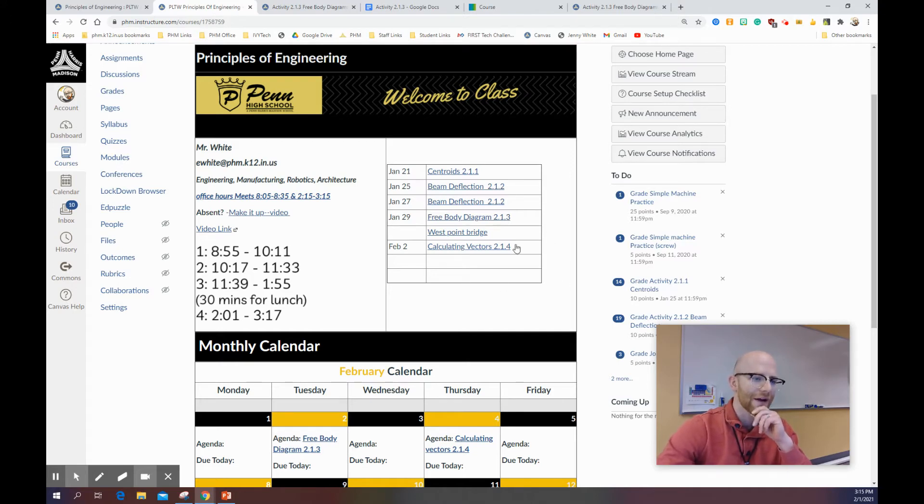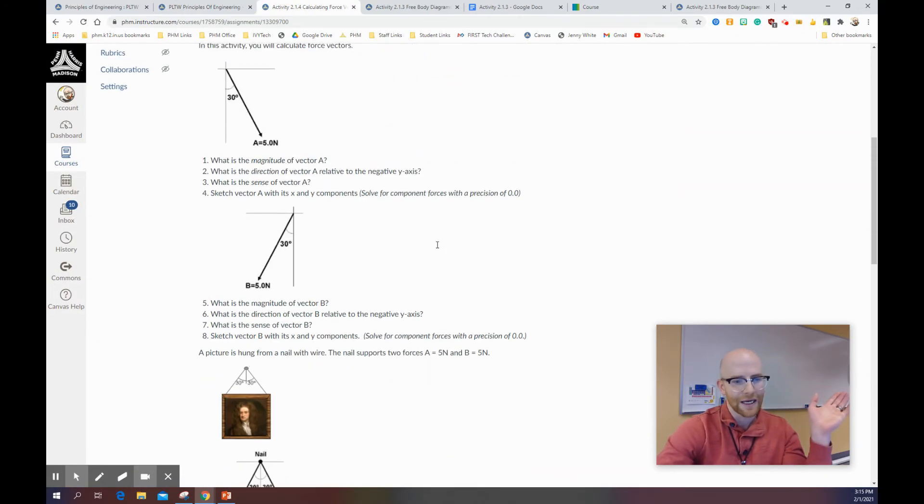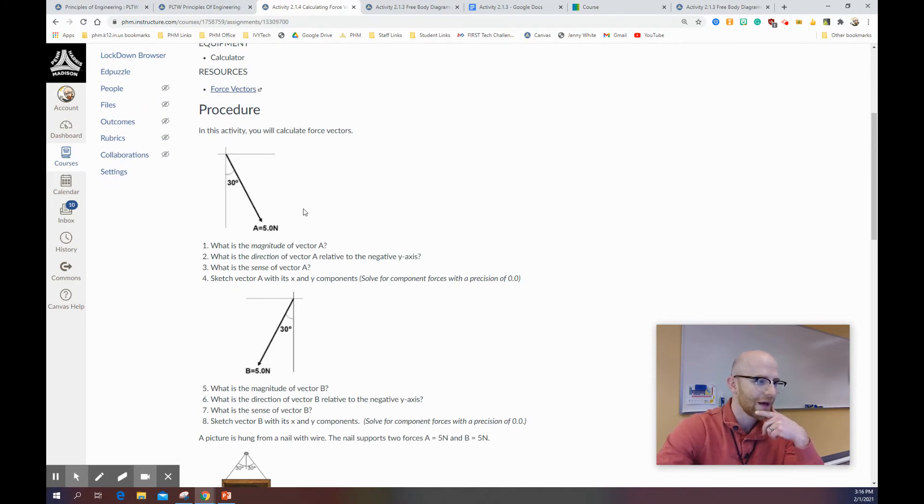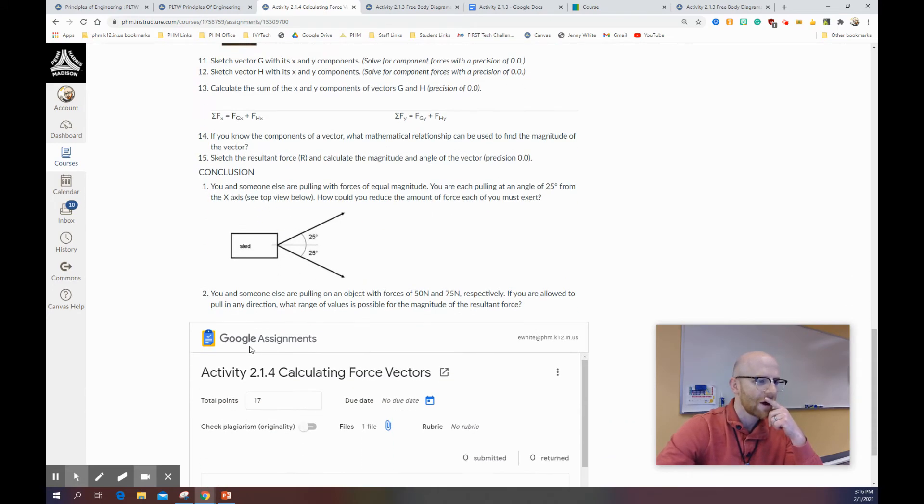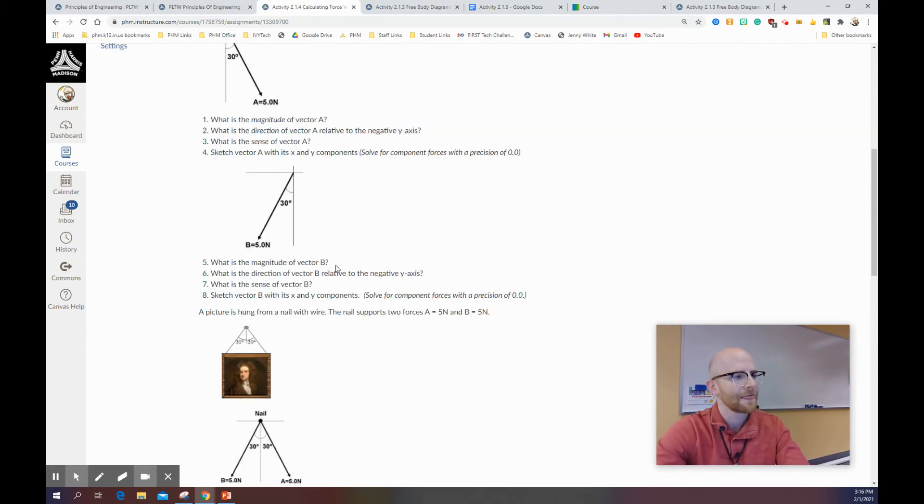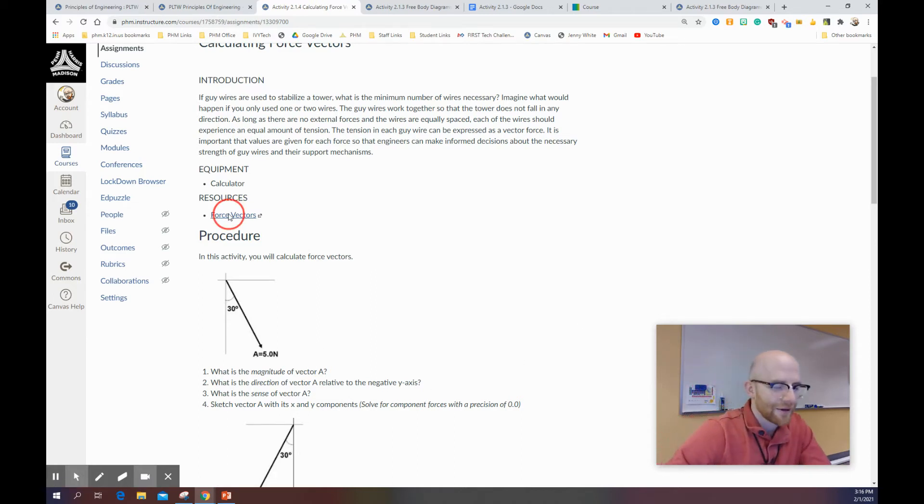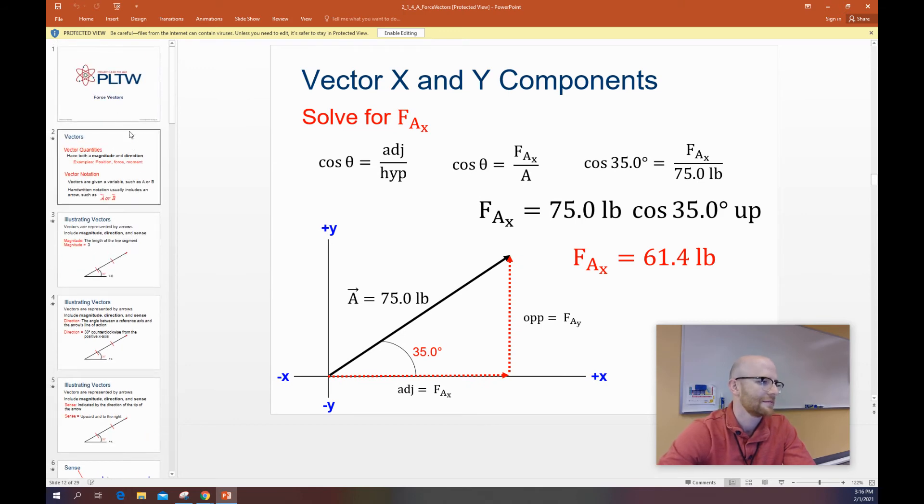The next thing is the calculating vectors, calculating force vectors. When I click on this, it's another assignment just like this. This is another one that is via canvas. The only thing is the force vectors here is an actual PowerPoint that you go over. This is something that you will need to go over. It's not something you can look at and say, ah, great. This is another one of those things where these 17 questions, 15 plus two conclusion questions are on the activity. That's what you're seeing for your Google doc. So you have to know the magnitude of A. What's the direction of A? What's the sense of A? And then you would say, okay, sketch vectors A with X and Y components.